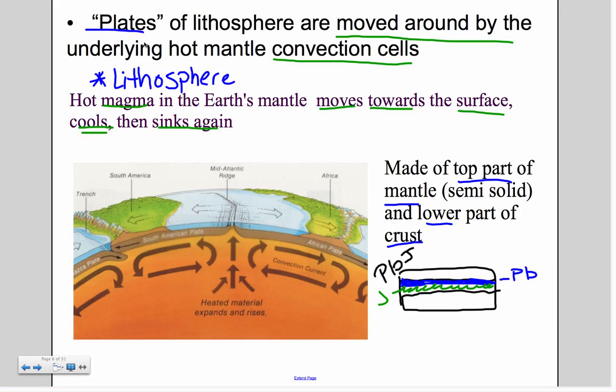The top part of the mantle is kind of a semi-solid, it's harder than like if you ever left Jell-O in the back of the fridge far too long, and it kind of gets that weird squishy material, but it's kind of rubbery. And then the lower part of the crust is also that same kind of semi-solid, squishy, hard jello.